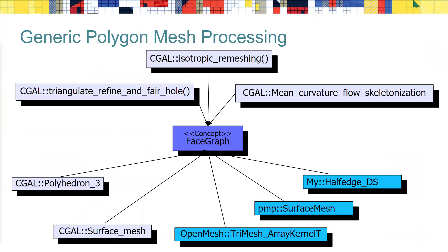The algorithms you have seen so far have a template parameter for the mesh type. We followed the design of the Boost Graph Library and extended its hierarchy of graph classes by adding the notion of faces. We introduced the concept of a face graph. This enables using CGAL algorithms with libraries such as OpenMesh, the PMP library also presented in this graduate school, and obviously with the two half-edge data structures in CGAL: Polyhedron and Surface Mesh.